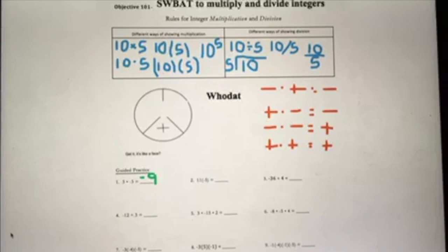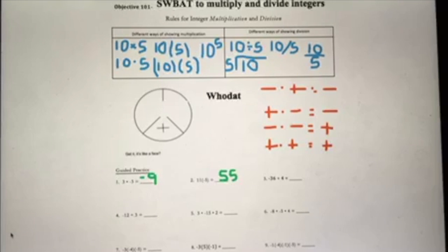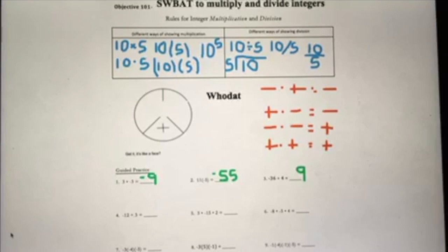Let's move on to number two: 11 times negative 5. Again, just worry about the numbers first — 11 times 5 is 55. Now look back to the values: you had a positive 11 and negative 5, and a positive times a negative is negative. So the entire answer is negative 55.